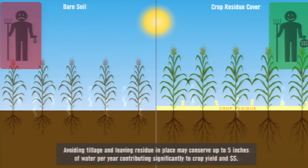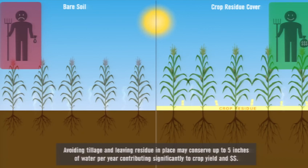Avoiding tillage and leaving residue in place may conserve up to 5 inches of water per year, contributing significantly to crop yield and the bottom line.